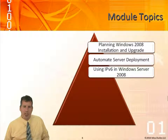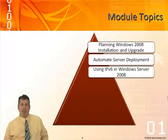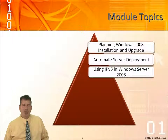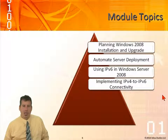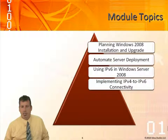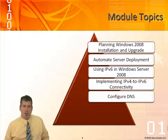Using IP version 6 in Windows Server 2008 — we're going to discuss the differences between IP version 4 and IP version 6. IP version 6 is 128 bits and allows us to have an IP address for any living organism on the earth. We're going to look at transition strategies in the next module: implementing IP version 4 to IP version 6 connectivity, covering things like ISATAP, Teredo, 6-to-4, and the different transition technologies.